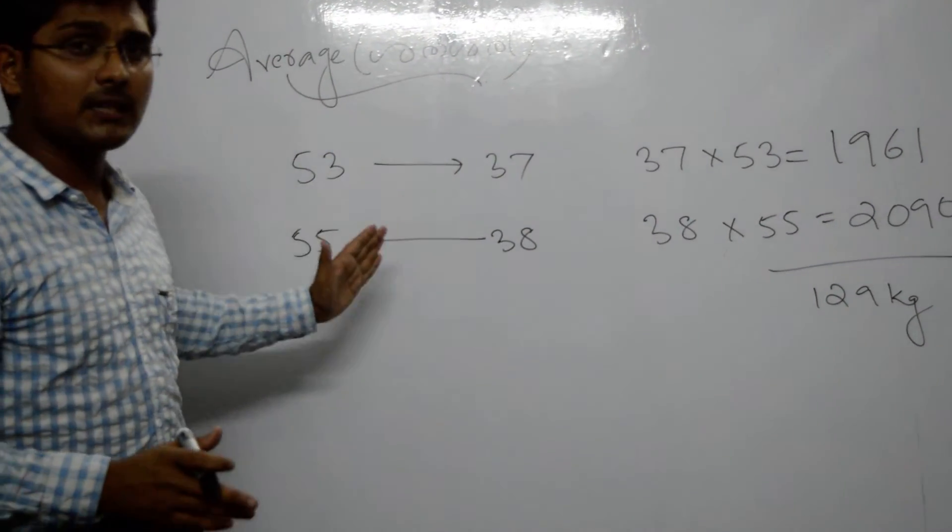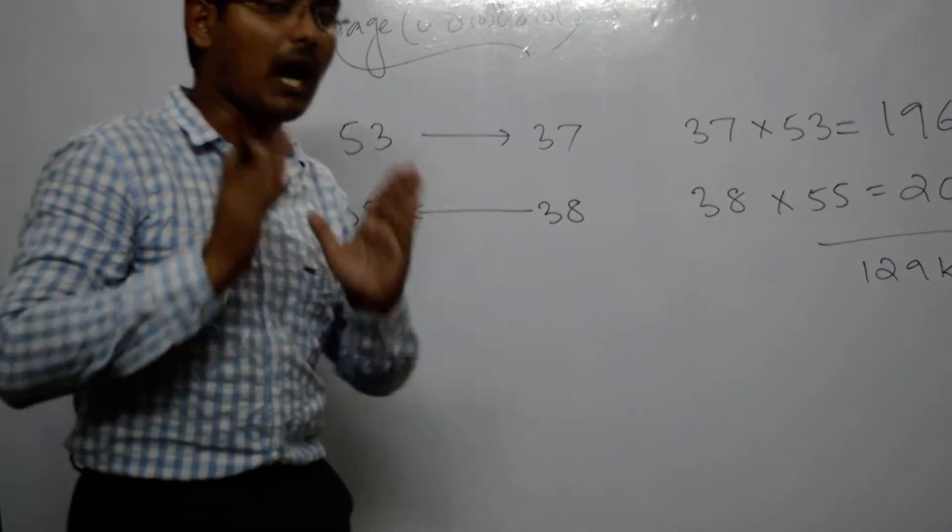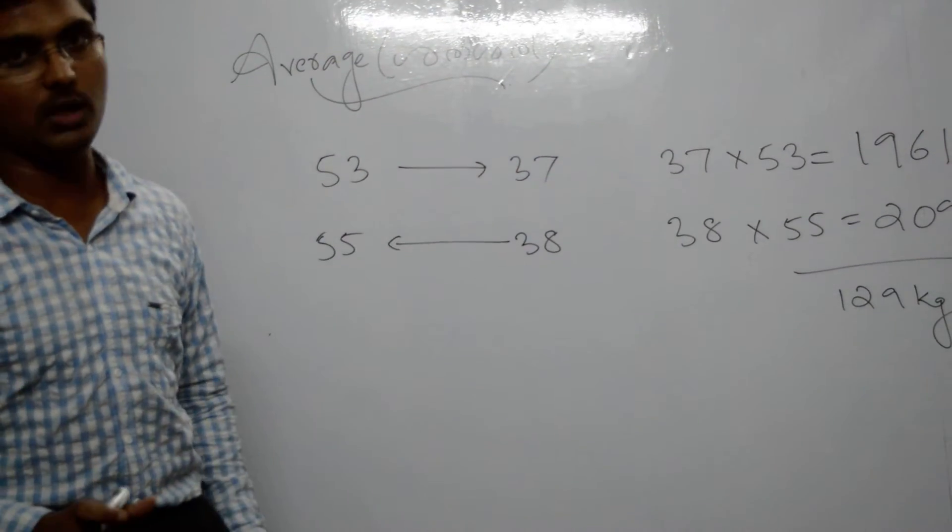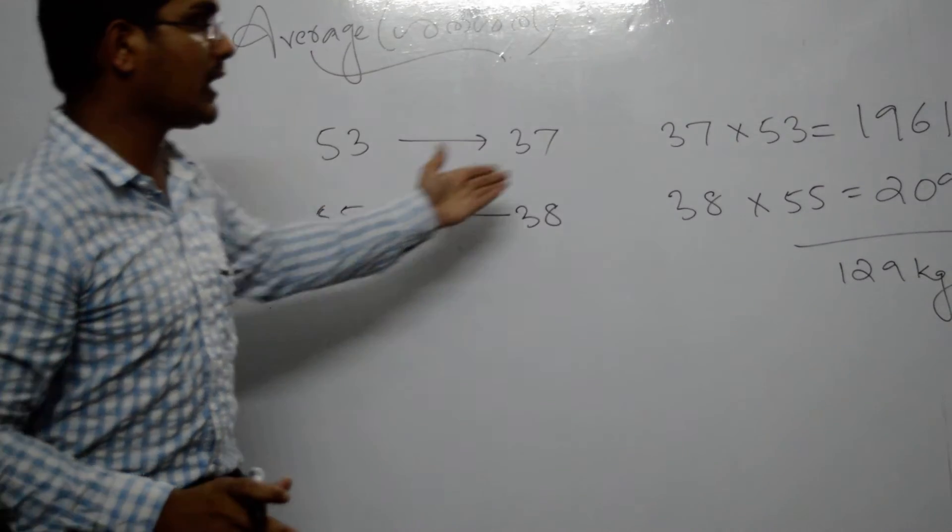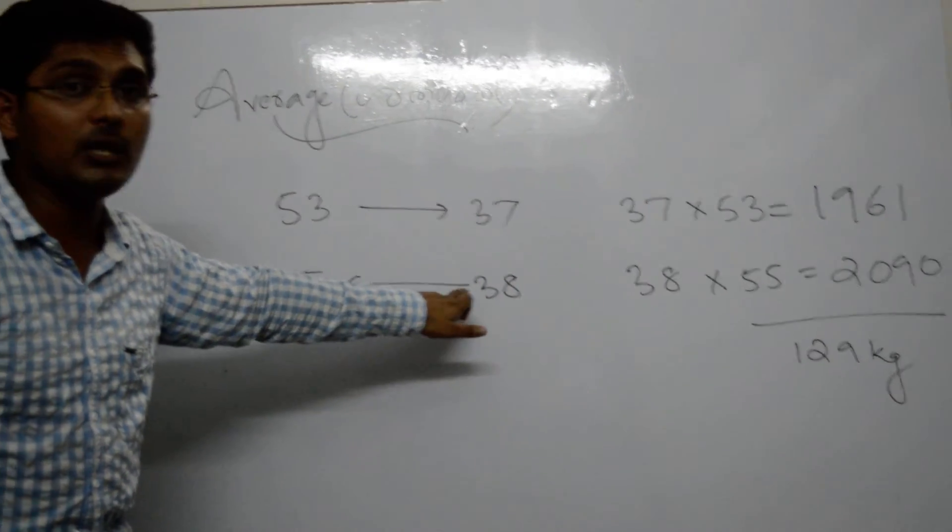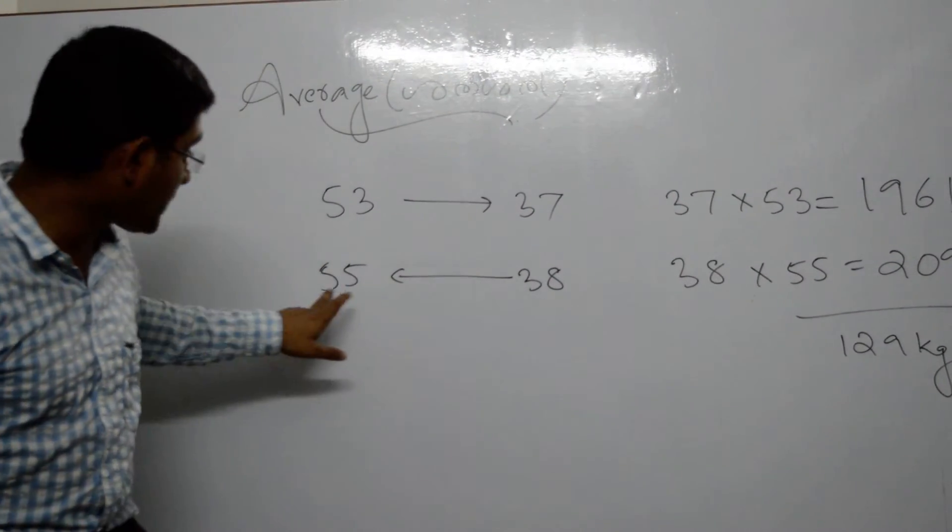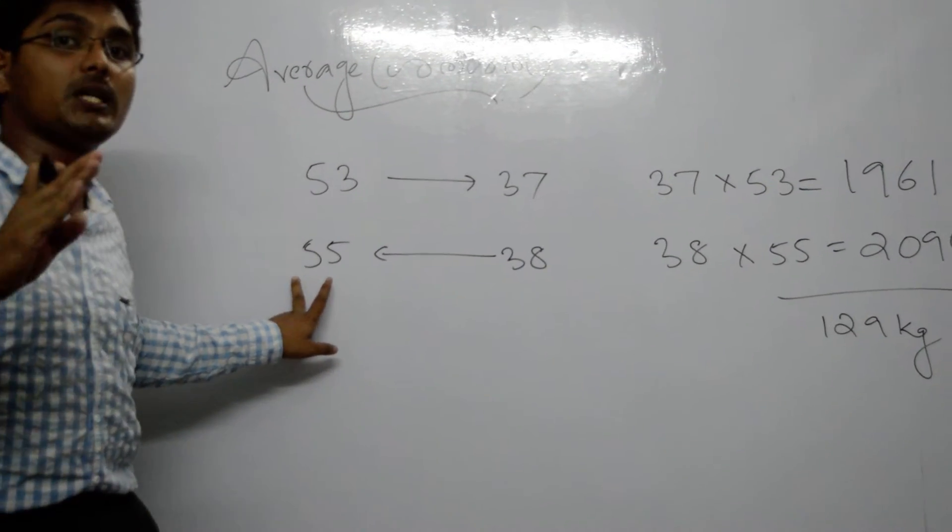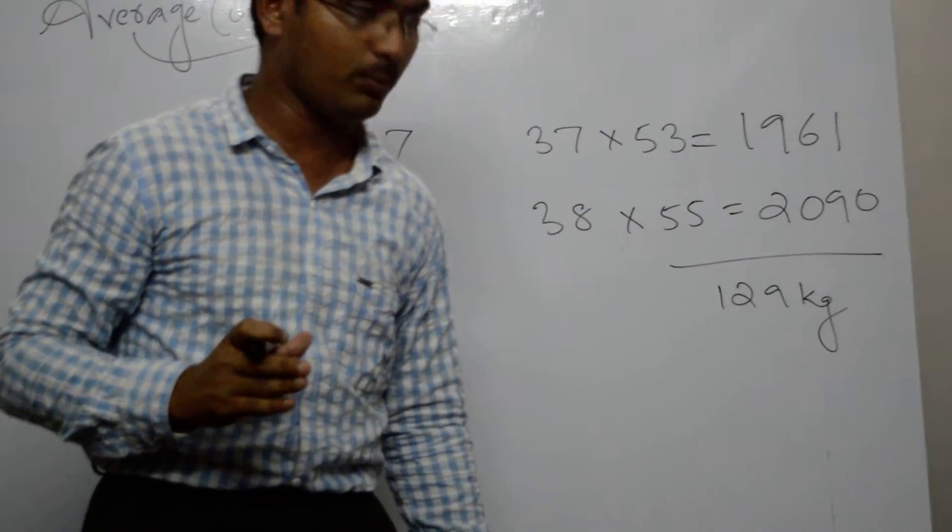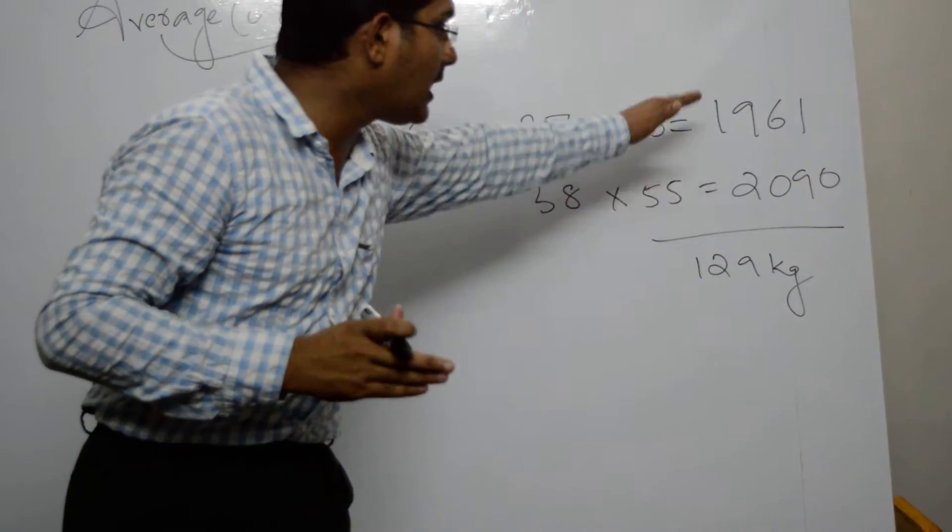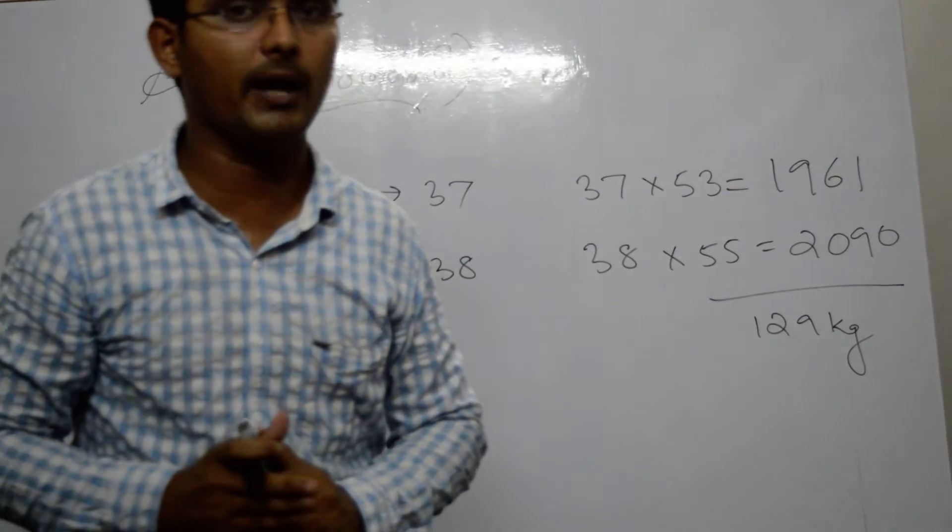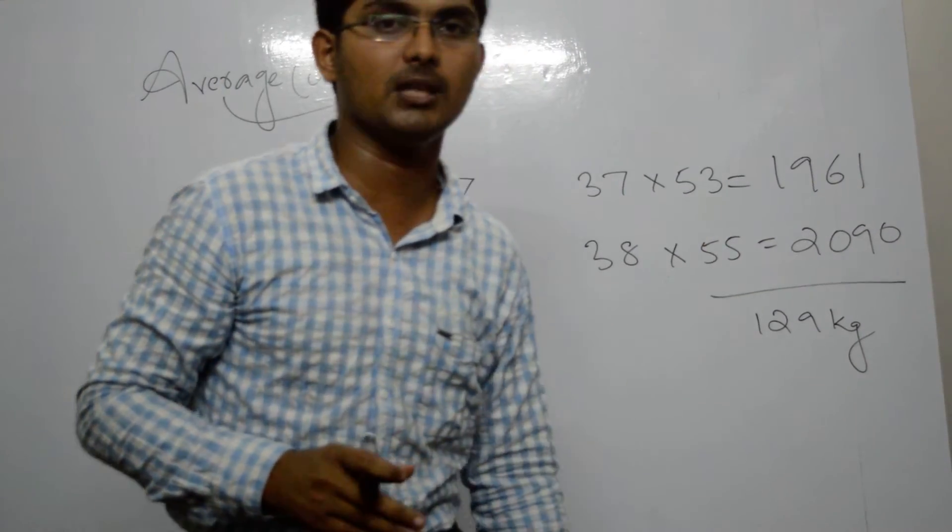The total weight of 37 students is 1961 kg. For 38 students at the new average, it's 2090 kg. Subtracting these gives us 129 kg, which is the weight of the new student.